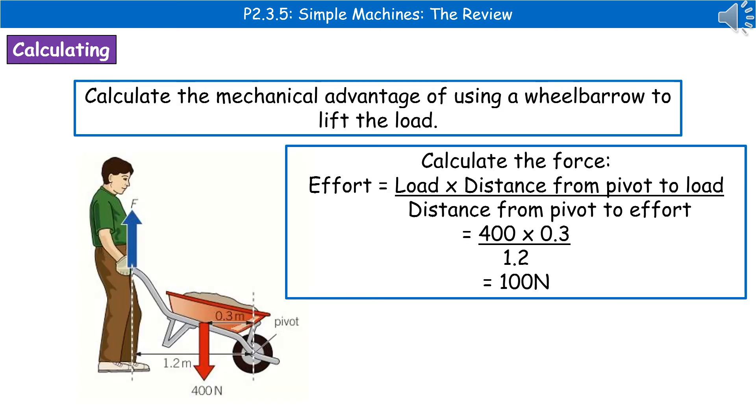To give you an example of the kind of question you could be asked here, calculate the mechanical advantage of using a wheelbarrow to lift the load. So you'd have a diagram with a few key bits of information there. So the first thing we need to do is to calculate the force. So the effort is our load times the distance from the pivot to the load divided by the distance from the pivot to the effort.